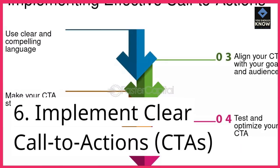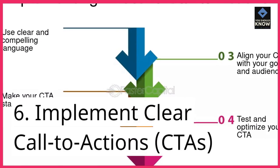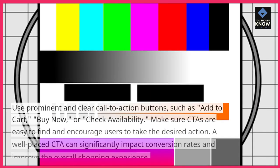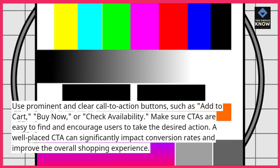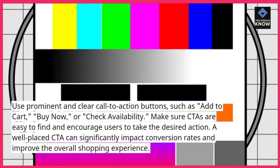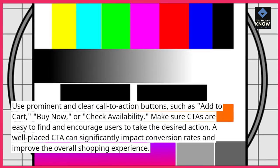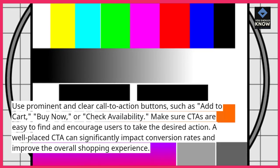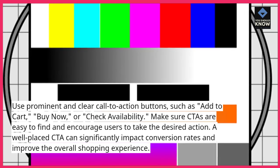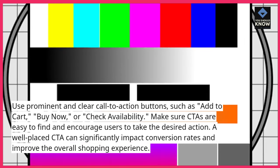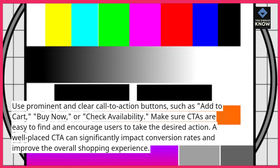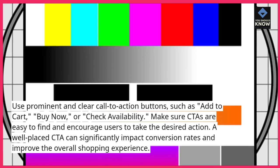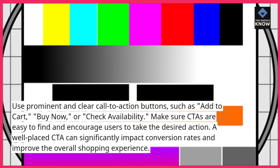6. Implement clear call-to-actions (CTAs). Use prominent and clear call-to-action buttons, such as add-to-cart, buy-now, or check availability. Make sure CTAs are easy to find and encourage users to take the desired action. A well-placed CTA can significantly impact conversion rates and improve the overall shopping experience.